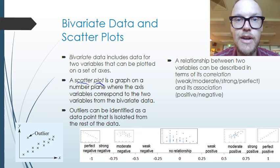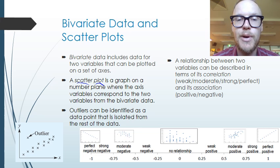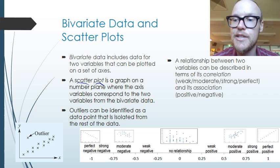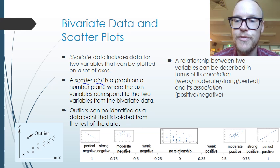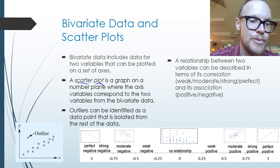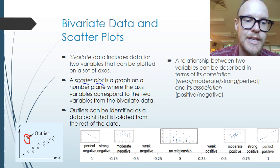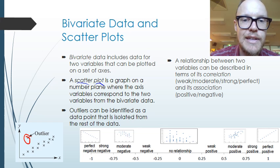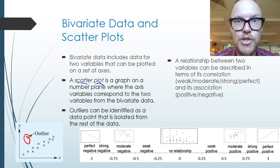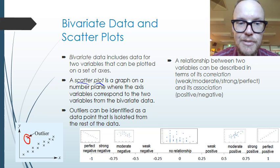We can identify any outliers by looking at points that are isolated from the rest of the data. For example, an outlier is a point that is significantly away from the majority of where the data lies.